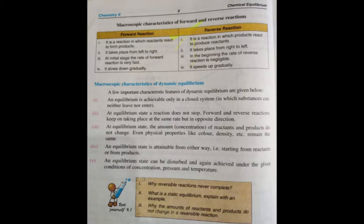The fourth characteristic is that equilibrium can be attained from either direction. At equilibrium, both forward and reverse reactions are taking place. This means we can attain equilibrium whether we start from the reactants or from the products. If we start from the reactants, they react to form products. If we start from the products, they break down and reform the reactants. Equilibrium can be attained from both ways.